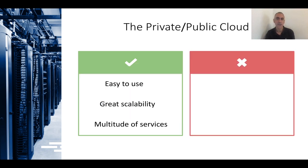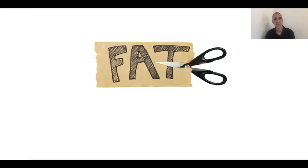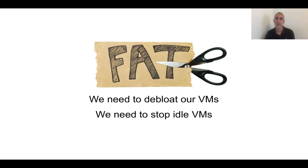But everything is not rosy. On the downside, the images — the virtual machines — are extremely bloated. They are on all or most of the time. And of course, this is a path for the environment. So what we need to do is trim that in two ways: one is that we need to de-bloat the actual virtual machines, and the other is that we need to stop having idle VMs running on the public cloud all the time.